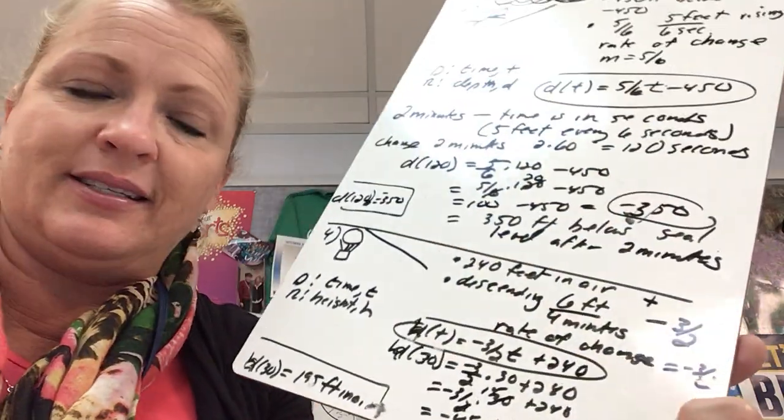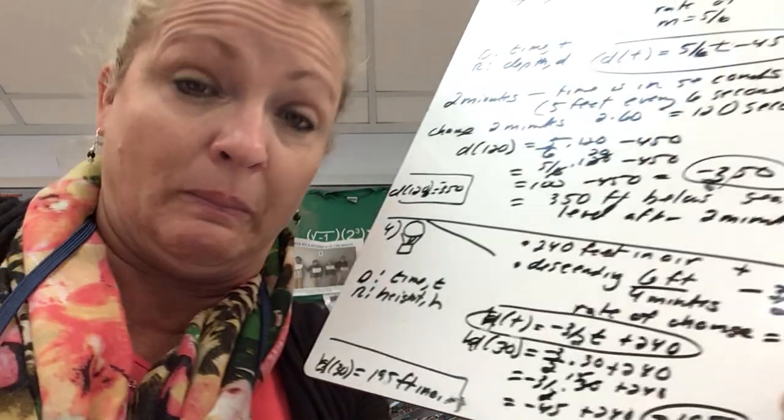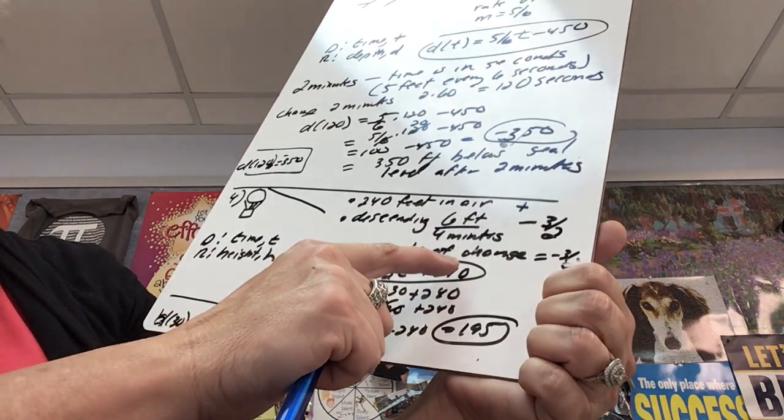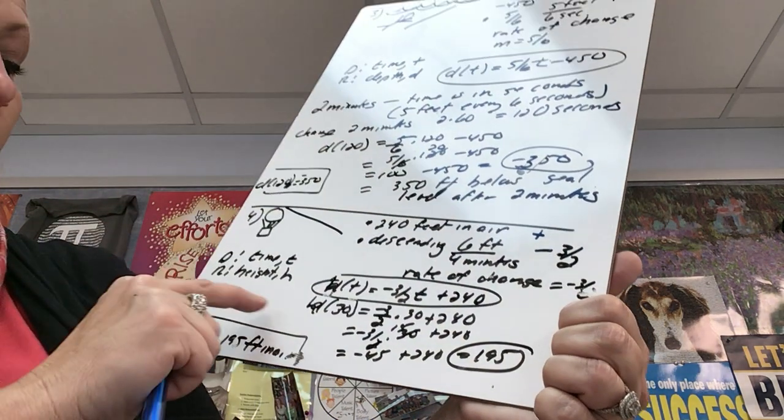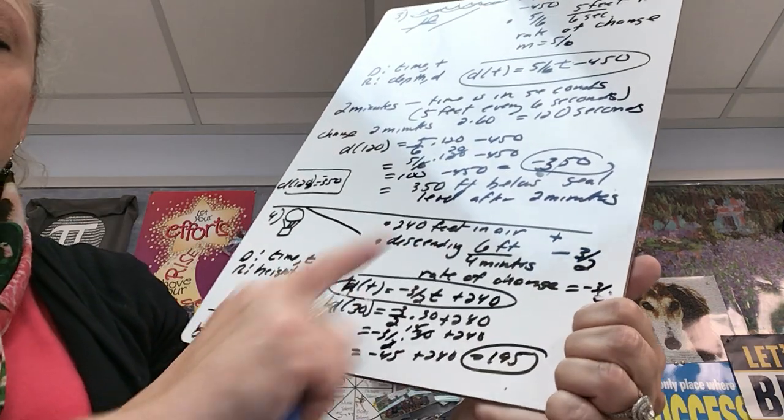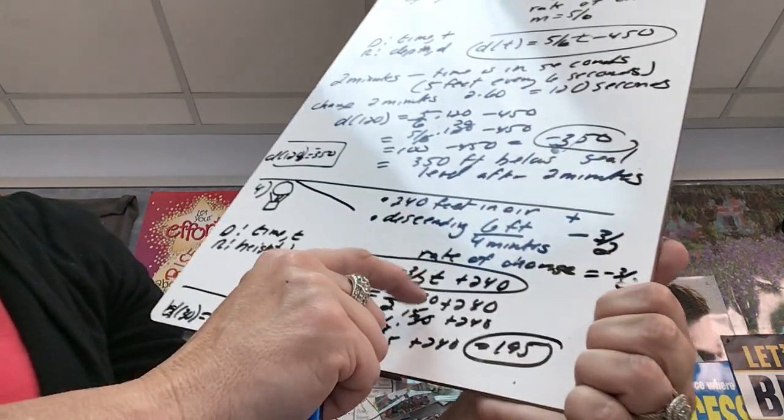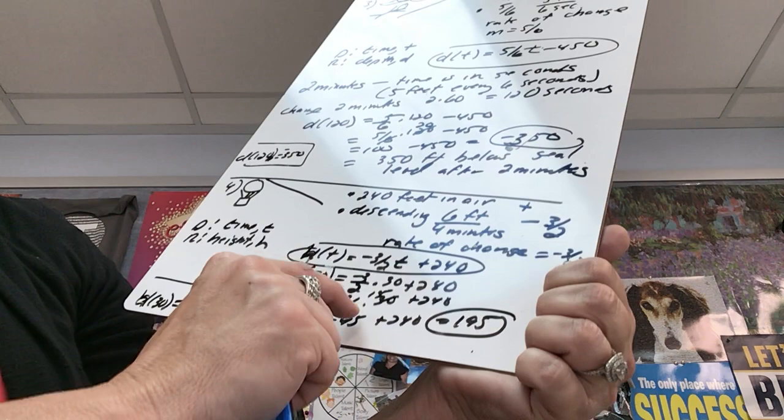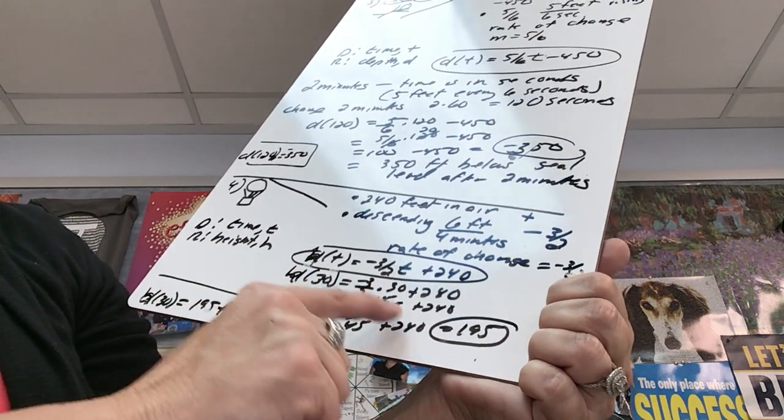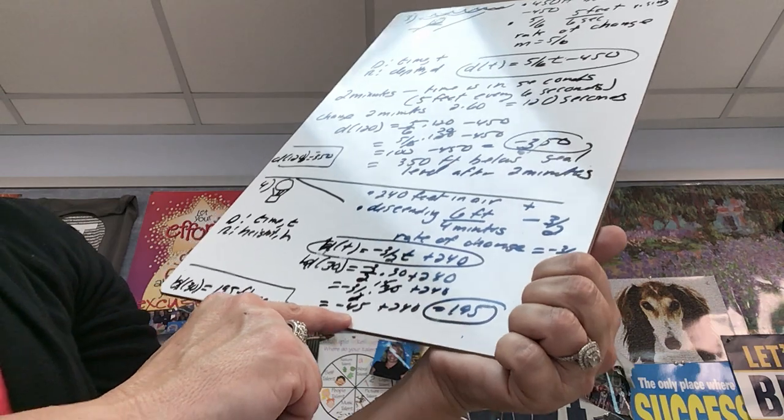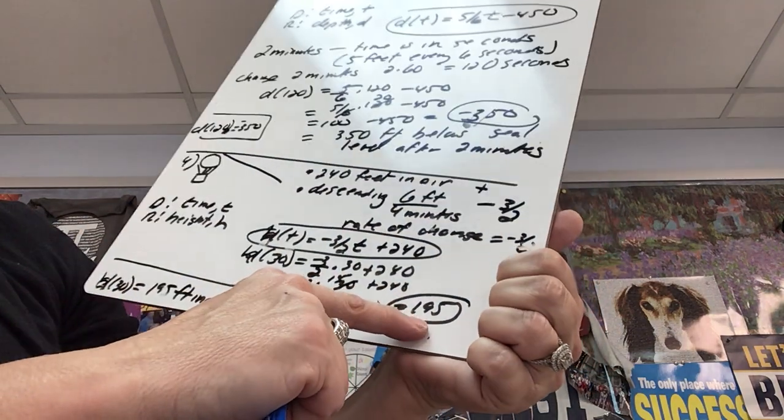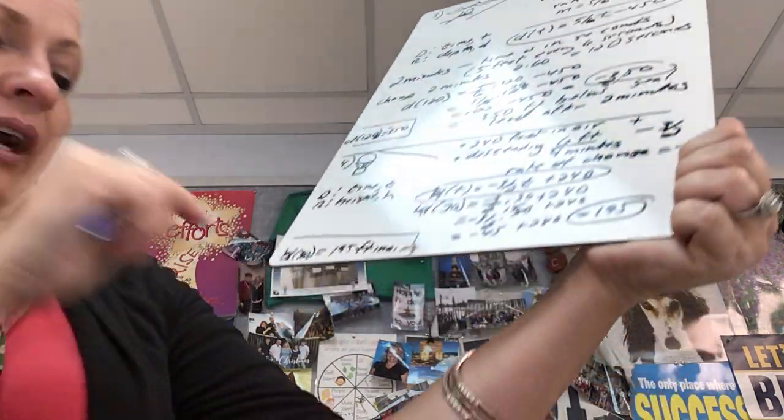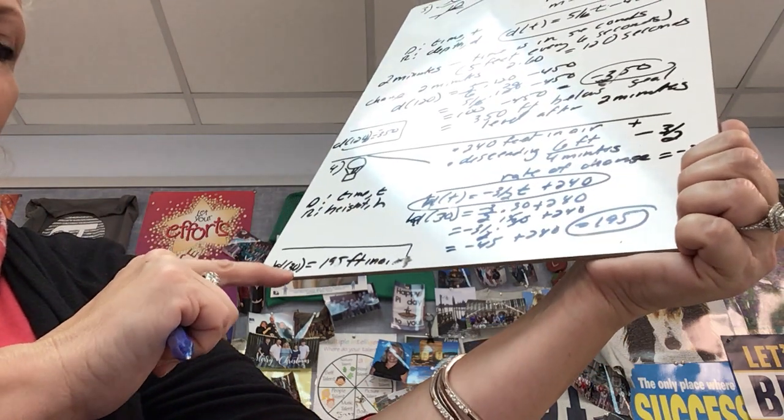Now it asks that after 30 minutes where is this balloon. Now balloons do not descend quickly and they shouldn't, because if they do there's a problem. This was six feet over, this was six feet four minutes, dropping six feet every four minutes. So I asked where is this after 30 minutes. So the time, the units match up, so that's good. So I'm going to put in 30 for t. So I have negative 3/2 times 30 plus 240. 2 goes into 30, 15 times. Negative 3 times 15 is negative 45. Negative 45 plus 240 is 195. So after 30 minutes, it's still 195 feet in the air.